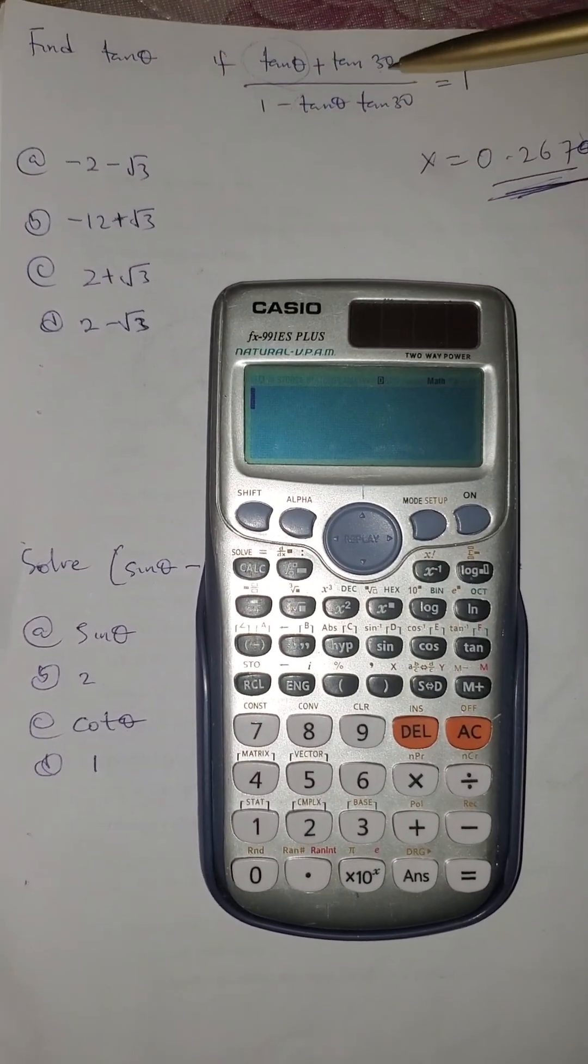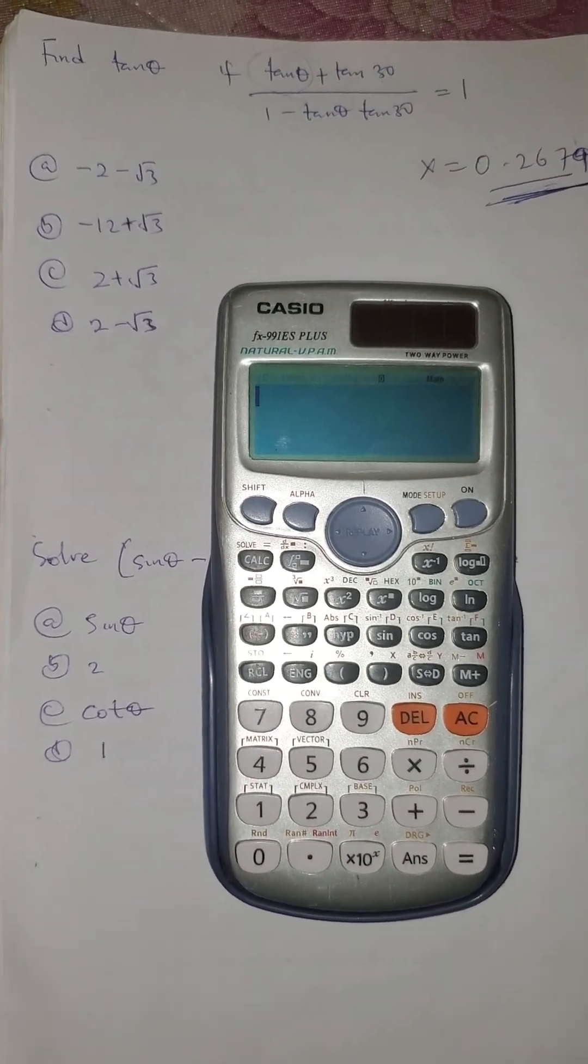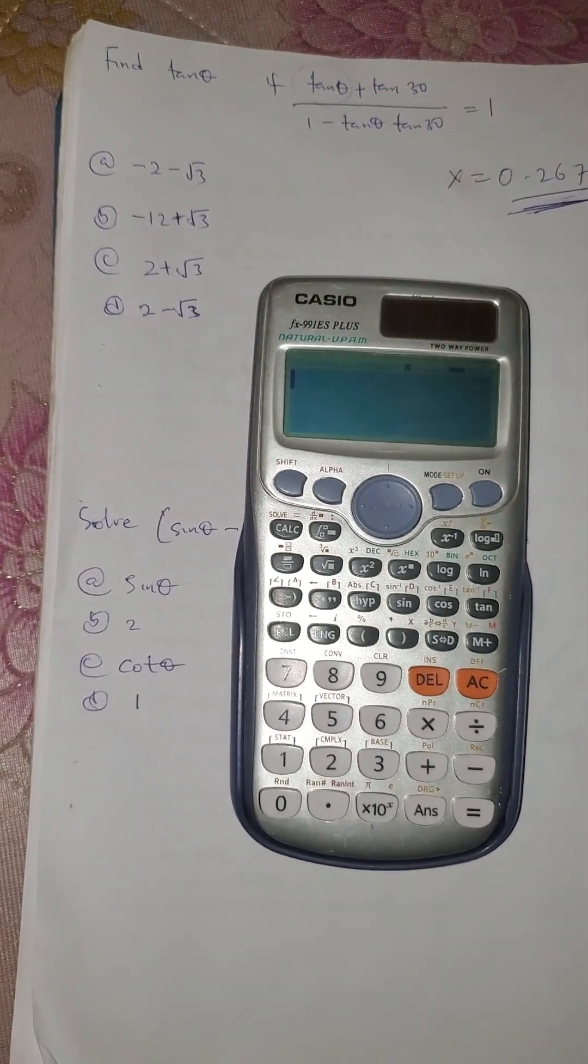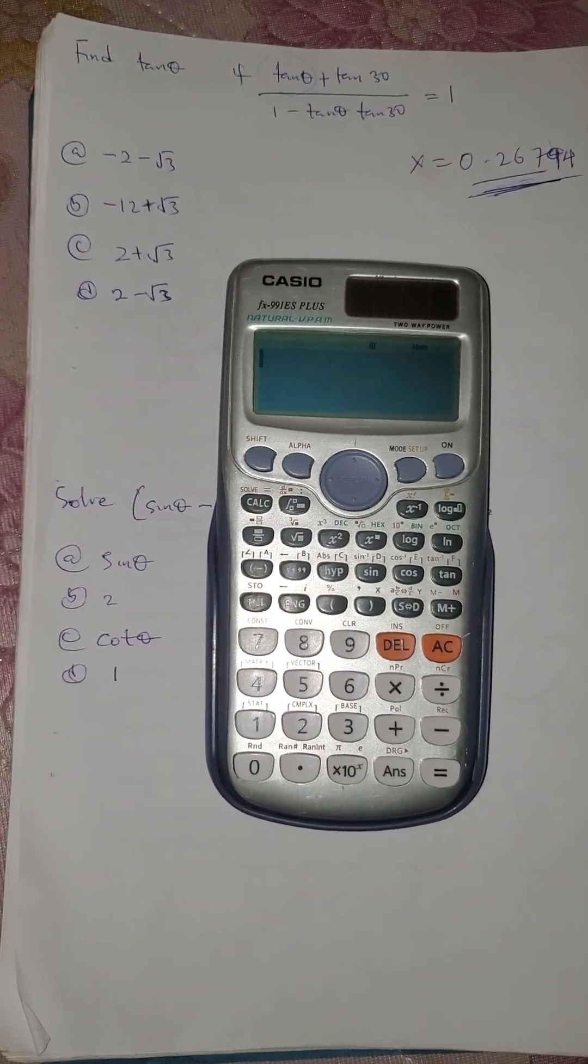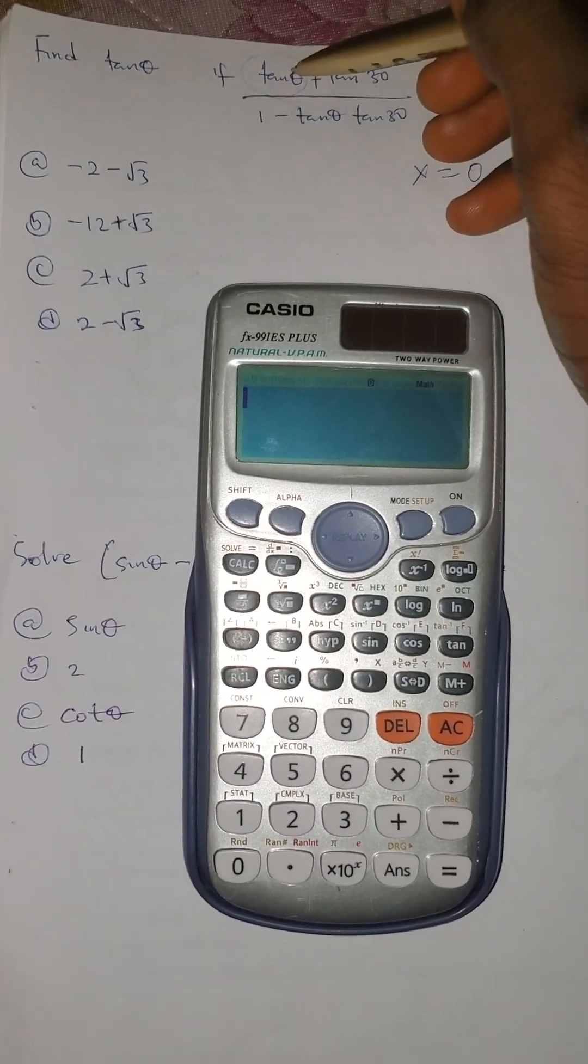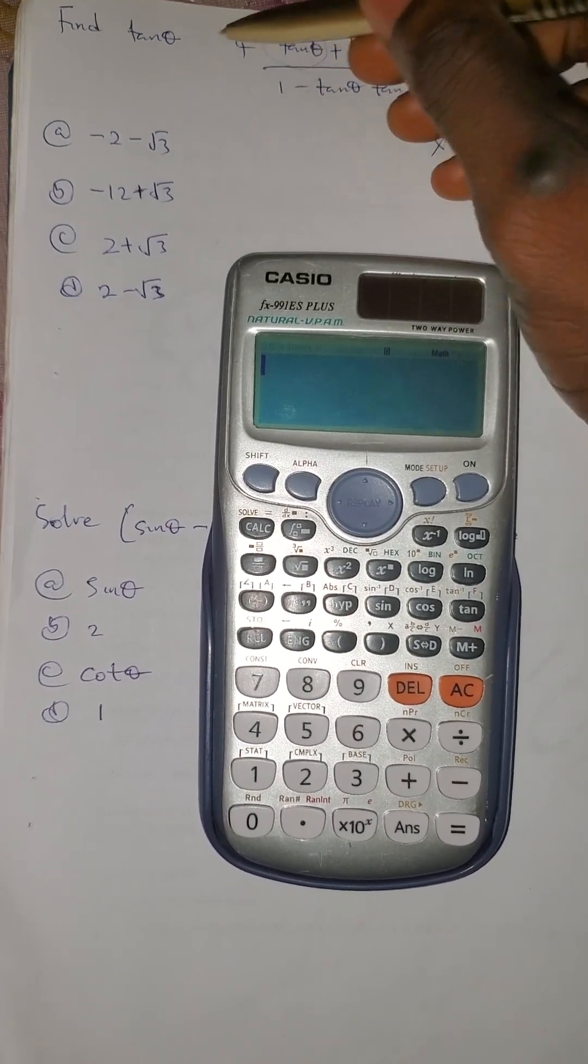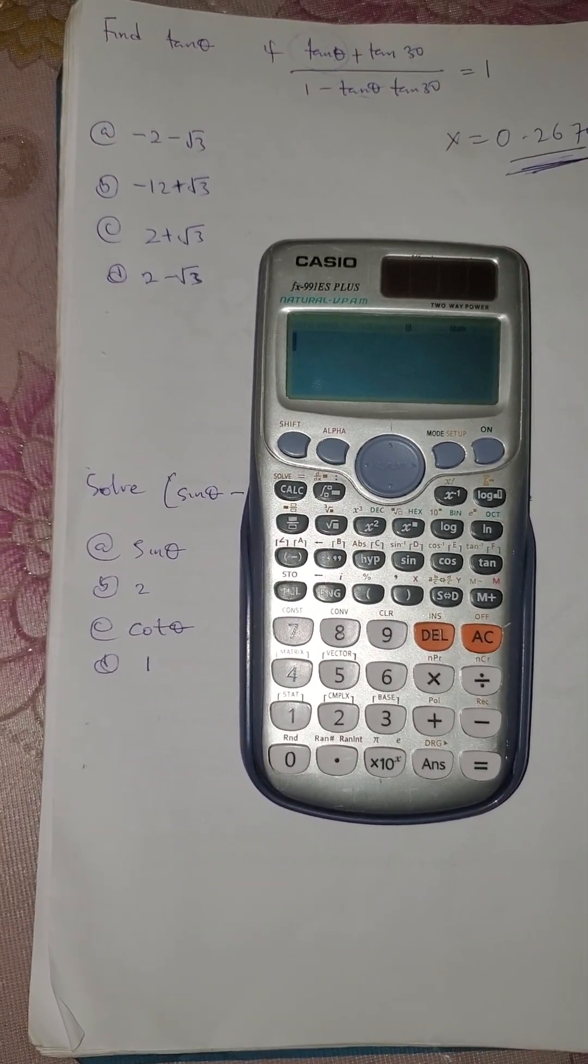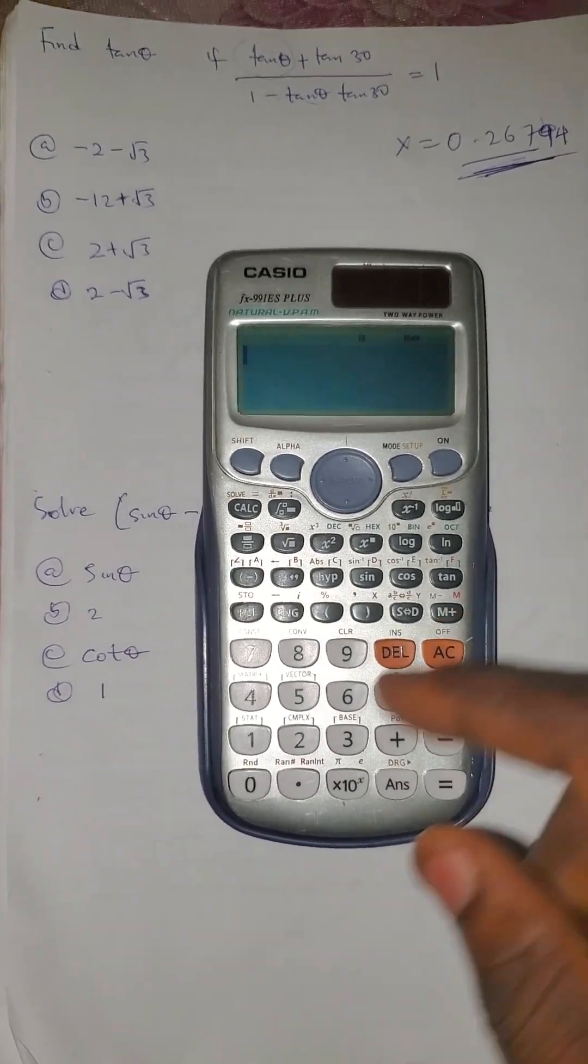The equation is: tan theta plus tan 30 over 1 minus tan theta tan 30 equals 1. How can I solve this? We are given these options. I'll substitute tan theta with x, making tan theta equal to x, then solve for x on the calculator.